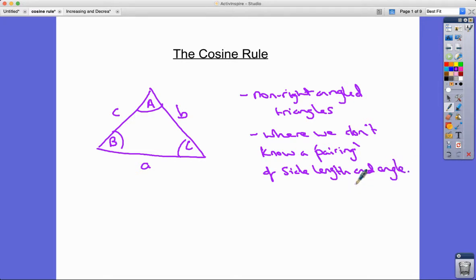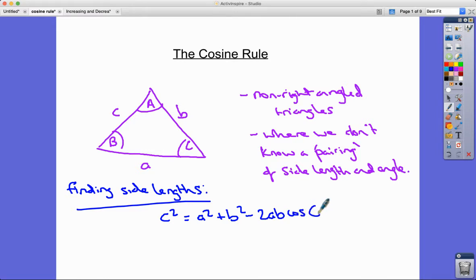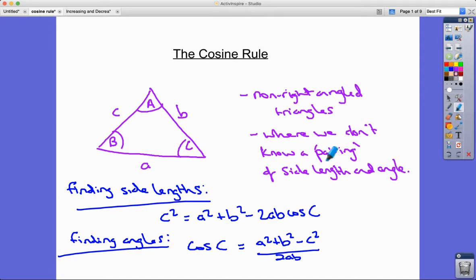So you'll see in the examples we're going to do what I mean by that. For finding side lengths, c² = a² + b² - 2ab cos C. For finding angles, we rearrange that slightly and put cos C as the subject: cos C = (a² + b² - c²) / 2ab. So there are two versions depending on what you're trying to do.